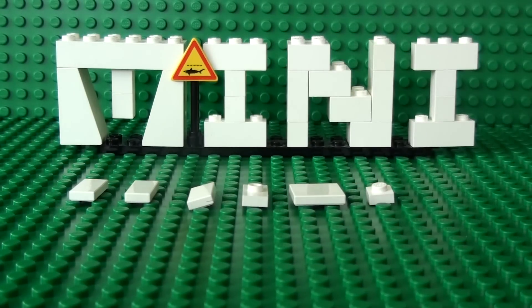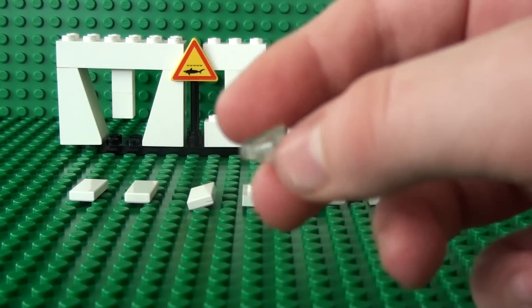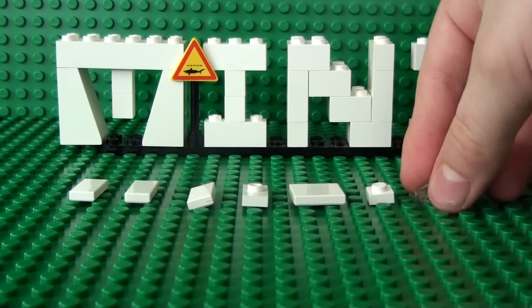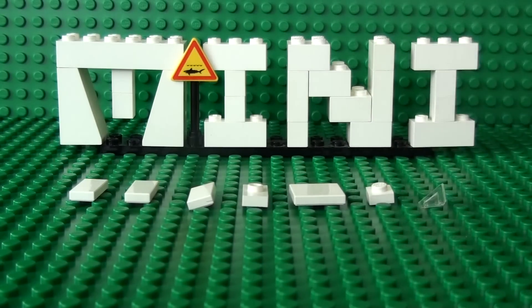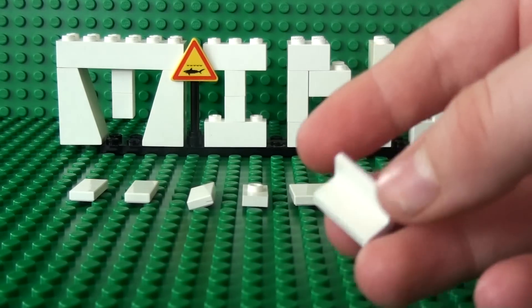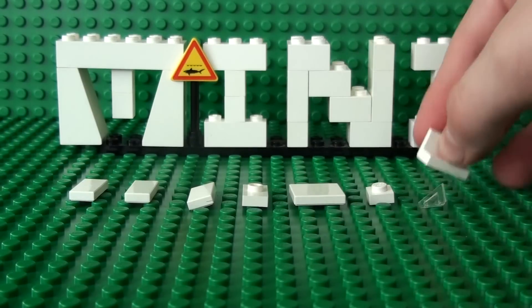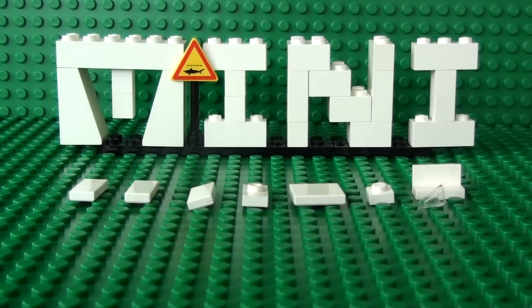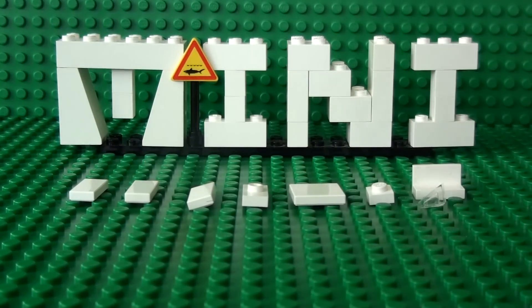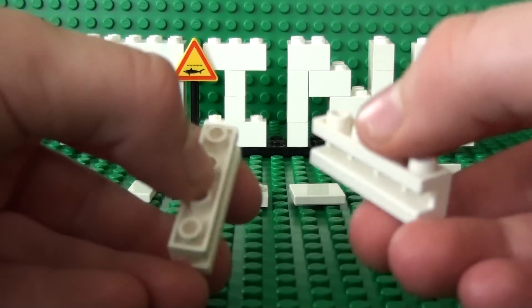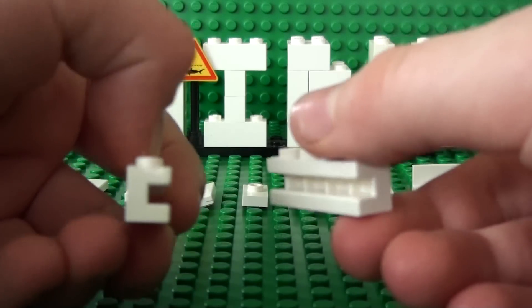You'll also need a transparent cheese wedge, an edge piece as I call it, and 2 of these 1x4 bricks with cuts.